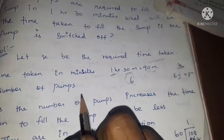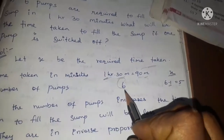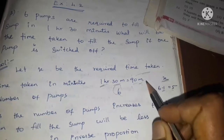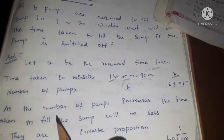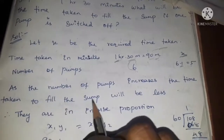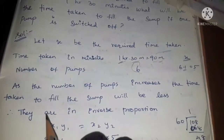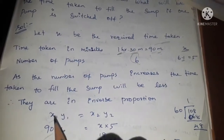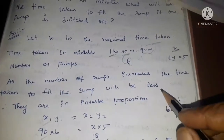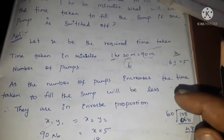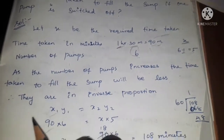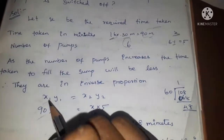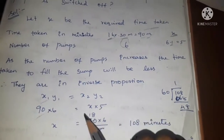Number of pumps: 6 pumps will fill the tank in 90 minutes. As the number of pumps increases, the time taken to fill the tank will be less. So there is inverse proportion. We use the formula x1 y1 equal to x2 y2.